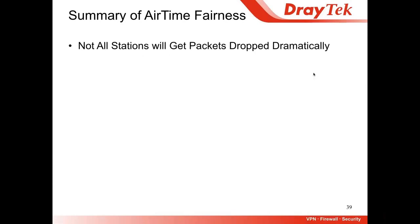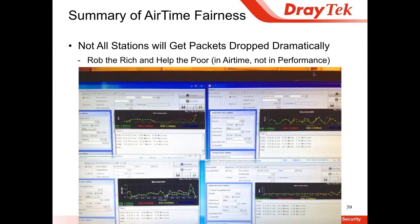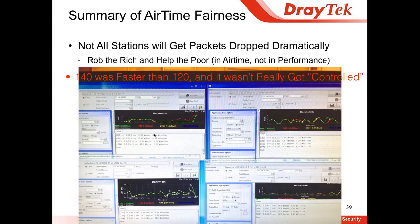Summary number three: not all stations got controlled. Airtime fairness is actually robbing the rich and helping the poor in airtime, not in performance. Looking at the group performance result, station 140 was running at almost 10 Mbps and barely got controlled. Station 120, in contrast, was getting controlled all the time. Station 130 was running at more than 10 Mbps and got controlled only briefly — the rest of the time it barely got controlled. So not every station will get controlled dramatically; only the station occupying too much airtime will get controlled.